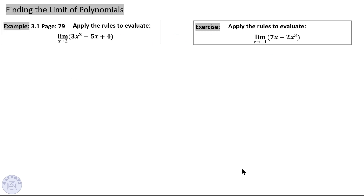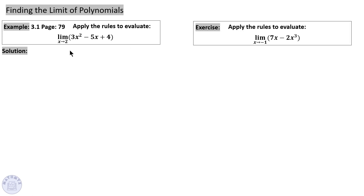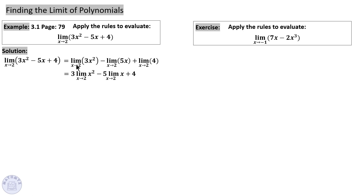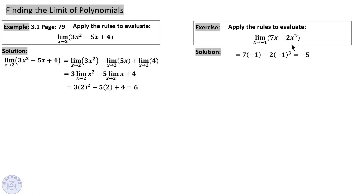Let's look at a couple of examples. We will distribute the limit for each term and then distribute the limit inside to the variable. This gives us 3(2²) − 5(2) + 4, which is 6. For the next question, it's direct substitution — substituting negative 1 in for x gives you negative 5.